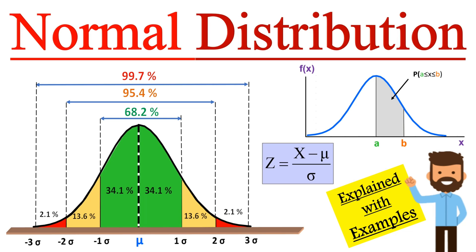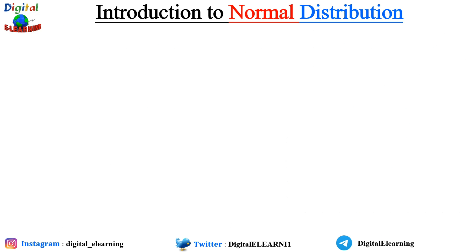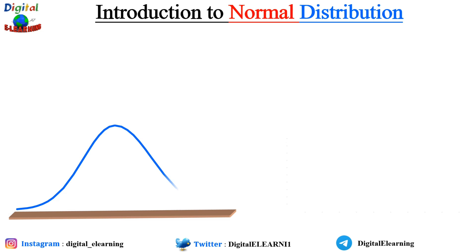This short animated video explains the basic concept of normal distribution. We'll also look at the empirical law of 68, 95, and 99, along with some characteristics of normal distribution and the standard normal distribution. We'll also look at some relevant examples, and in the end we will have some quiz, so sit back, relax, and enjoy this video.